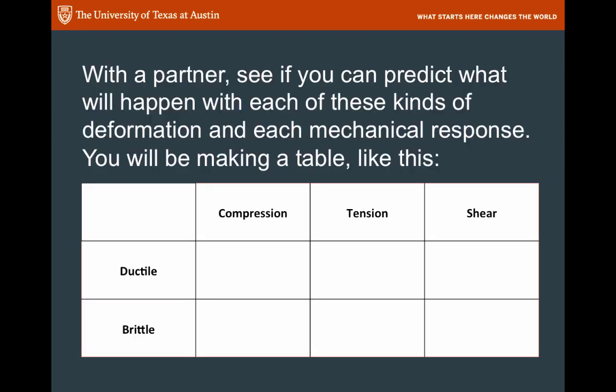So you can see then that there are six potential end members for the kinds of deformation that you might have. You can have compression, tension, and shearing stresses behaving in either ductile or brittle ways.